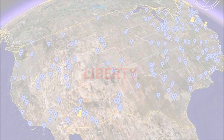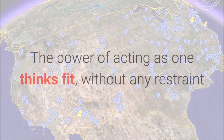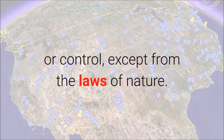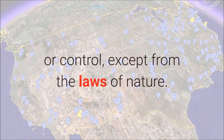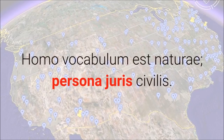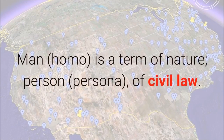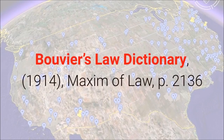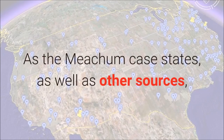Thank you, Mr. Justice Stevens. Are you simply trying to get a message to the people to aid their understanding of what is happening in America, or do you truly not understand the nature and history of the term person? I believe it is the former. The concept of person, in the civil law or body politic, is a creature of the state. The term person is a creature of civil law developed for the society of slaves in the Roman Empire, which consisted of a matrix of corporate political societies. We saw earlier that civil persons and legal persons can be created by a legislative body. Liberty: Freedom from restraint. The power of acting as one thinks fit, without any restraint or control, except from the laws of nature. Bouvier 1856. Homo vocabulum est naturae, persona juris civilis: Man is a term of nature, person of civil law. Bouvier's Law Dictionary, 1914, Maxim of Law, p. 2136.